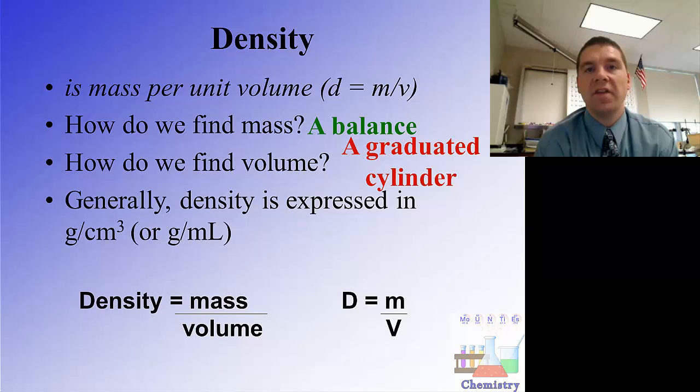So to summarize, to calculate the density of a substance we need to know two things about it: the sample's mass and its volume. And then we are going to divide those two terms, mass over volume.